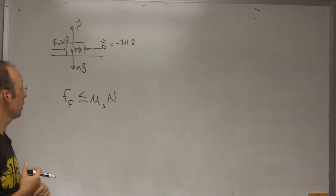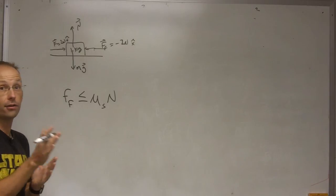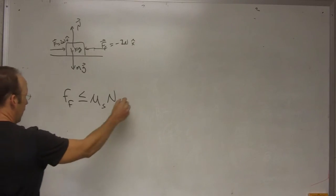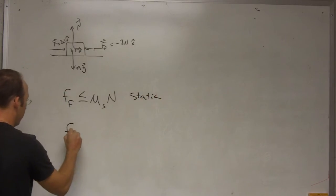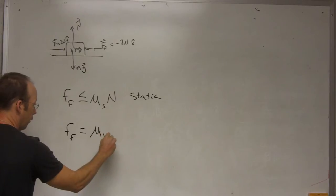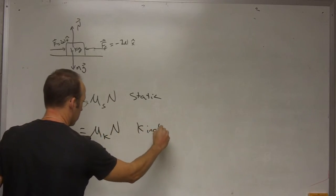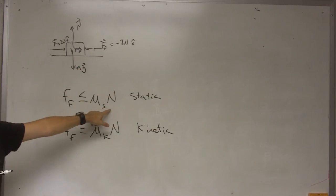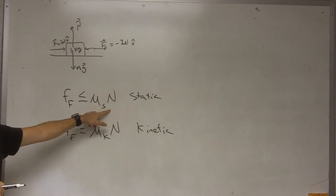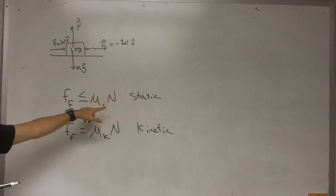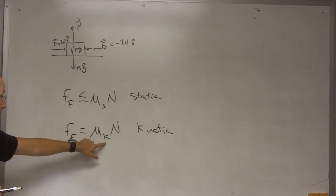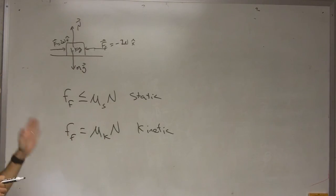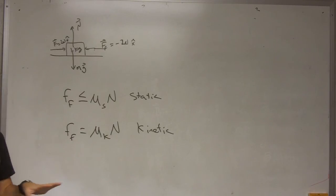So this is our model for friction. Once things start to slide, the friction force becomes equal to some other coefficient times the normal force, and this we call kinetic friction. Now, does it depend on the surface area between the two objects? This model says no. Does this model say the faster you go, the more friction there is? Not according to this model — it just depends on how hard they're pushing together. This is a model that works in a lot of cases but not every case. It's the one you'll see in introductory physics because you can work with it. Friction is a complicated thing in reality, and this is just a simple model for it.